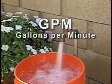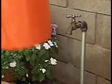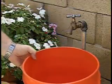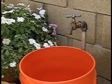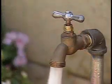While we're here, let's determine the water capacity or flow for your property. Place the five gallon bucket under the faucet. The plan is to determine exactly how many seconds it takes to fill the bucket up to the five gallon mark.